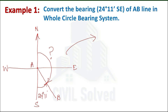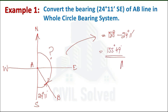Since we are asked to convert into the whole circle bearing system, in WCB the angle is always measured from north and clockwise. So this will be the required angle. We know the total angle from north to south is 180 degrees. Subtracting 24 degrees 11 minutes from 180 degrees gives us the required angle. After calculation, the final value is 155 degrees 49 minutes — this is the bearing of line AB in whole circle bearing.